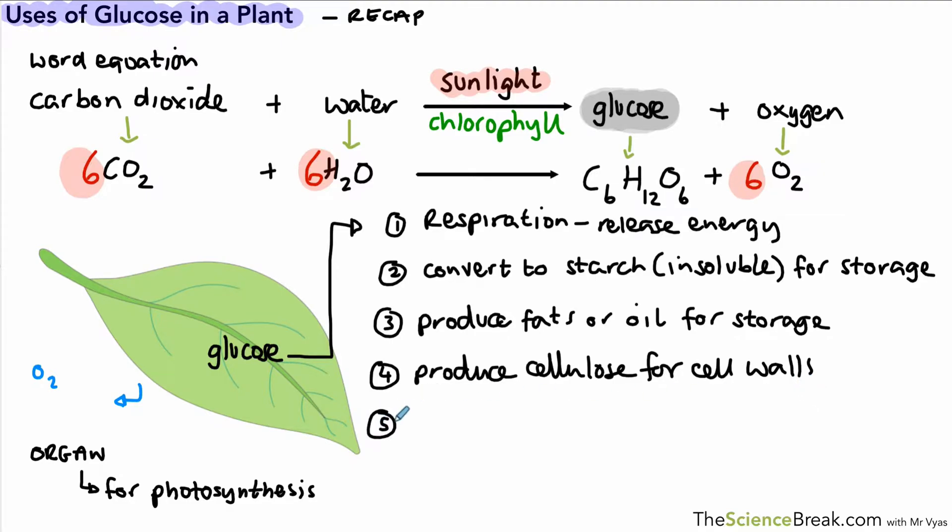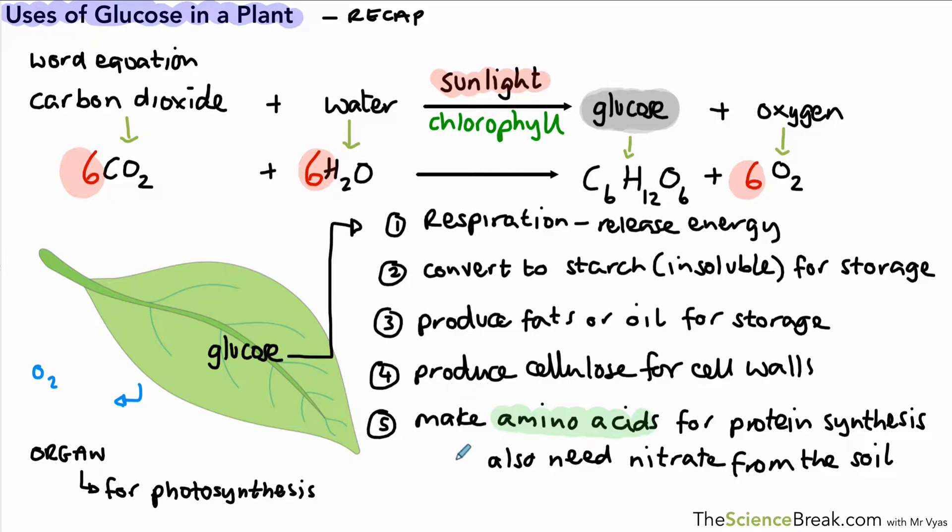The fourth use is for building something, and that is building cellulose for the cell walls around all the cells in a plant. The fifth use is also for building, and that's to build proteins. That's done via the process of making amino acids, so the glucose is used to make amino acids, and that then goes through the process of protein synthesis, which is basically making proteins. There is one more ingredient that we need in order to do that, and that is nitrate from the soil. So we've got glucose made in photosynthesis plus some nitrate ions that are brought up from the soil, which combines with the glucose to make the amino acids, and then the proteins can be made.